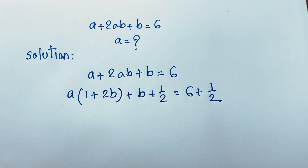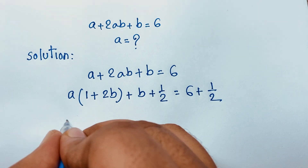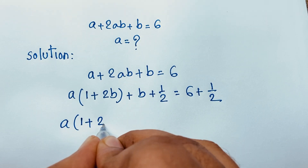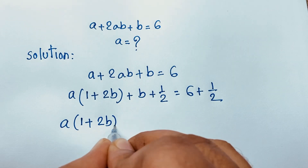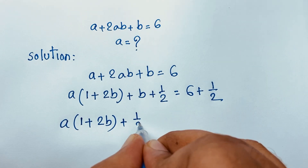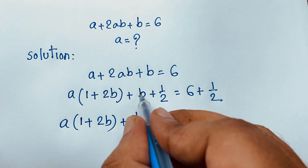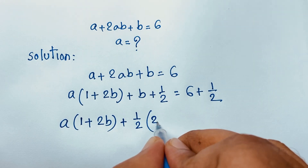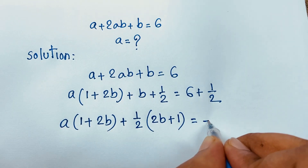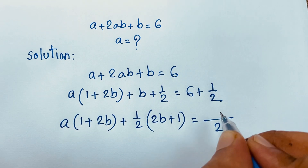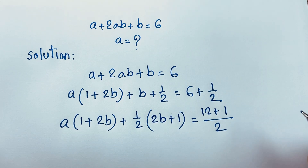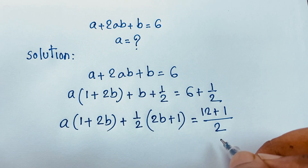You can see here a(1 + 2b), and 1/2 is common on the left side. If I take 1/2 as common: (b + 1/2) gives 2b/2 + 1/2. The least common denominator is 2, so the right side becomes 12/2 + 1/2 = 13/2.